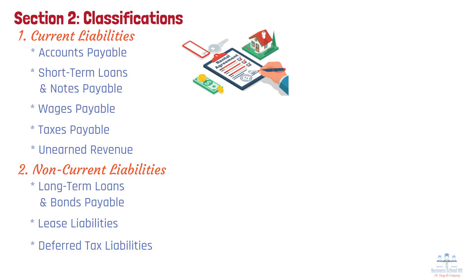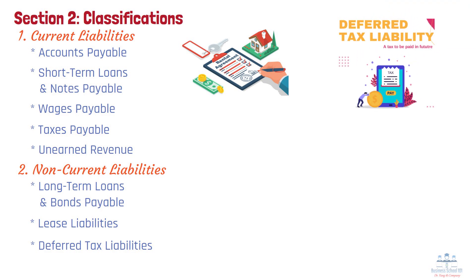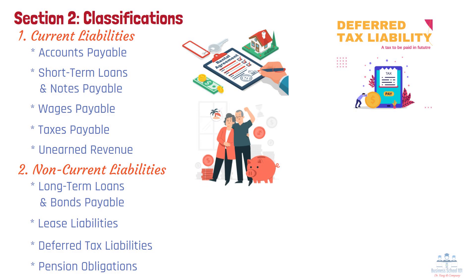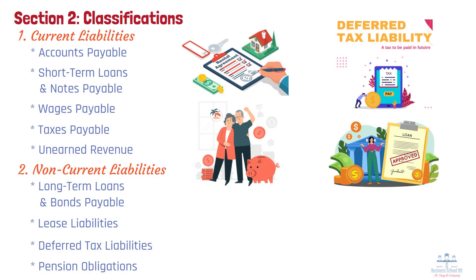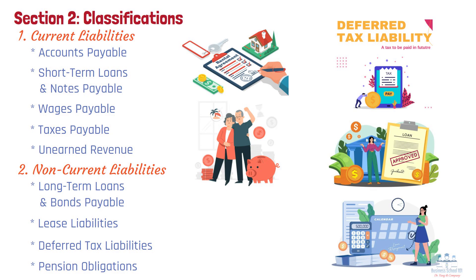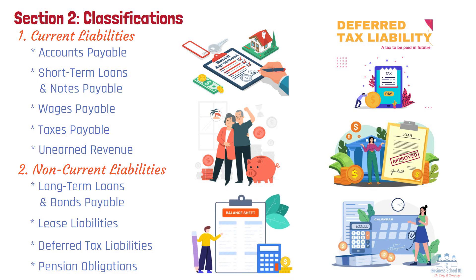Additional examples include: Deferred Tax Liabilities, which refers to taxes owed but deferred to future periods due to timing differences in tax reporting; and Pension Obligations, which refers to future payments to employees for retirement benefits. For example, a technology company may take out a five-year bank loan to build a new headquarters. This loan is classified as a non-current liability because it will be repaid over multiple years, and the company records it on the balance sheet and pays interest on the outstanding balance.